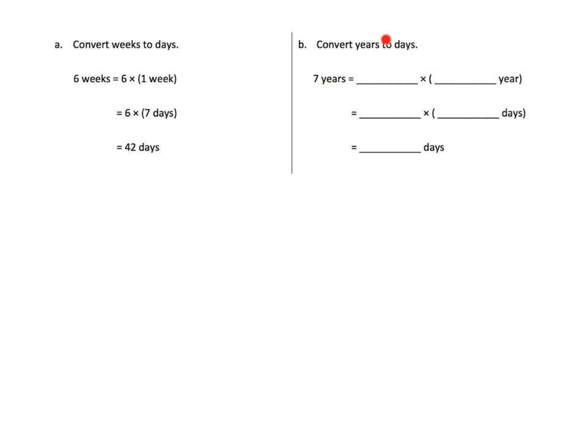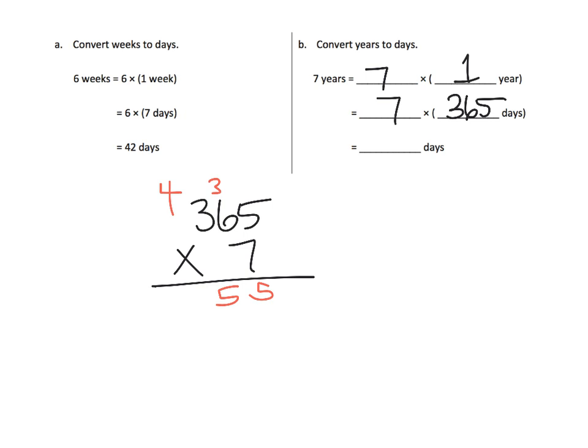So, 7 years. That's 7 copies of 1 year. And because we want to convert years into days, 1 year is equal to 365 days. So, that really means we have 7 copies of 365 days. Now, we need to actually do the multiplication, because we have 7 copies of 365 days. So, now we need to do 365 times 7. So, let's see, that's 35, and then 6 times 7 is 42, plus 3 is 45, carry the 4, and then 7 times 3 is 21, plus 4 is 25.